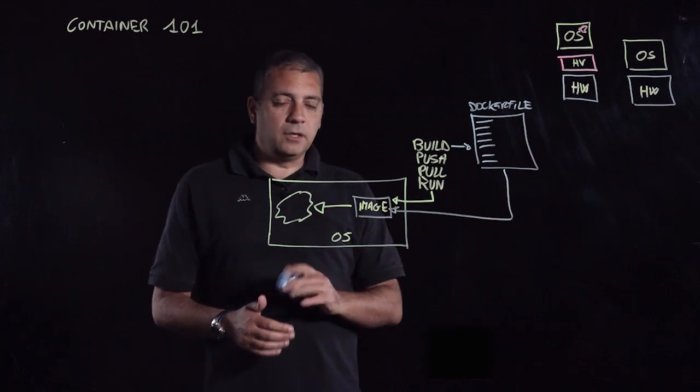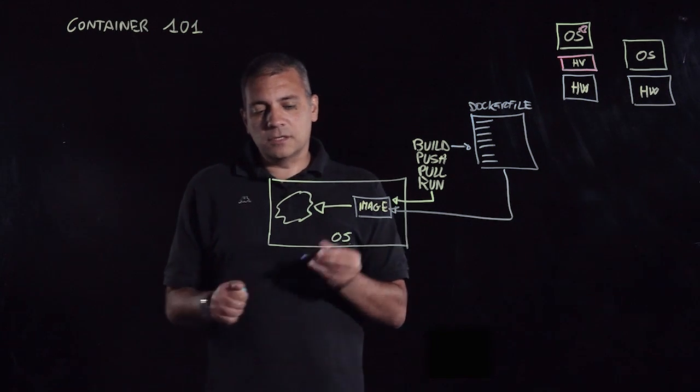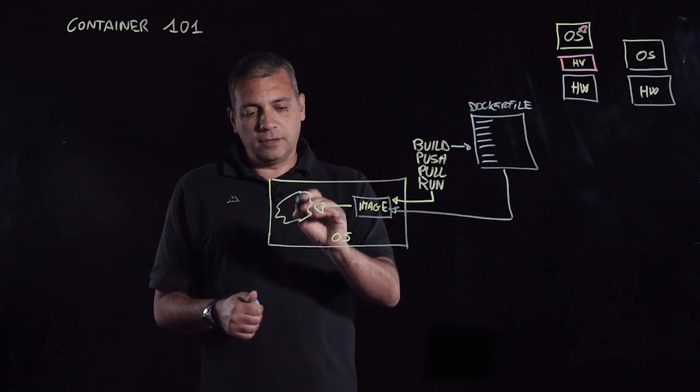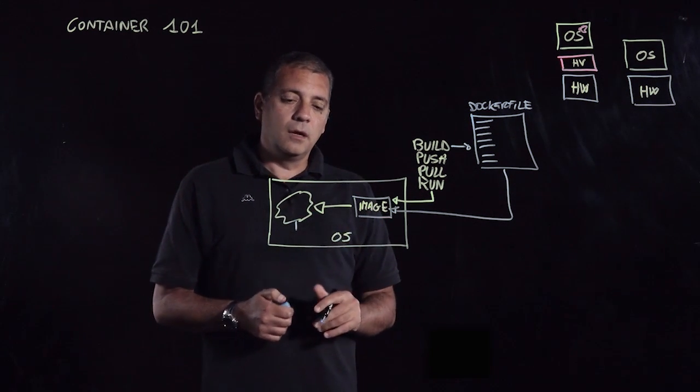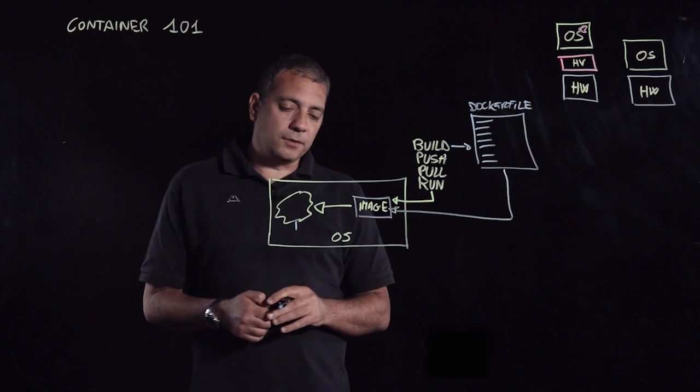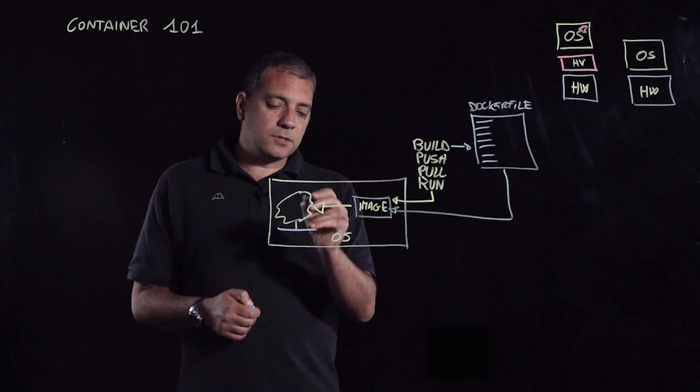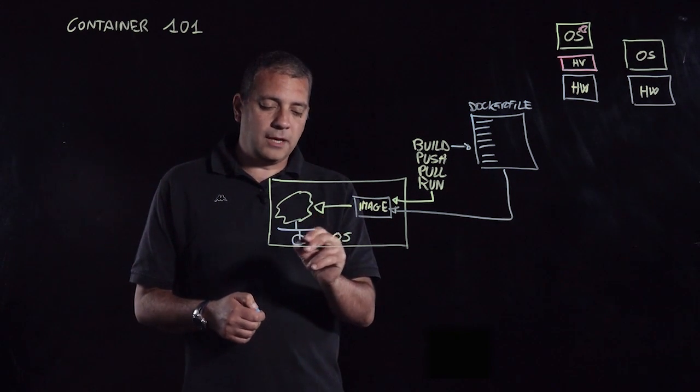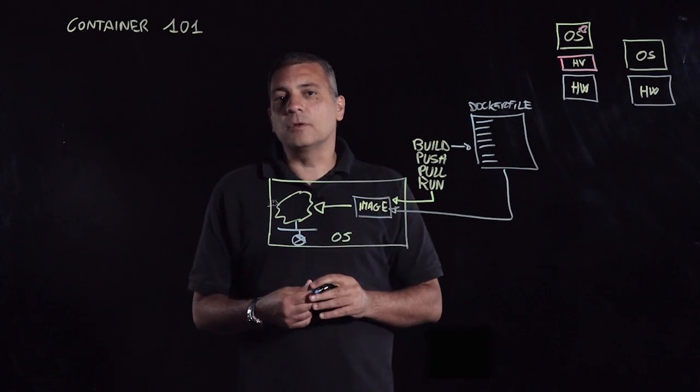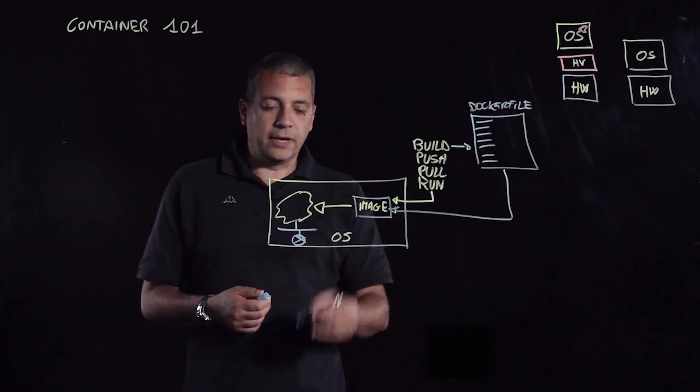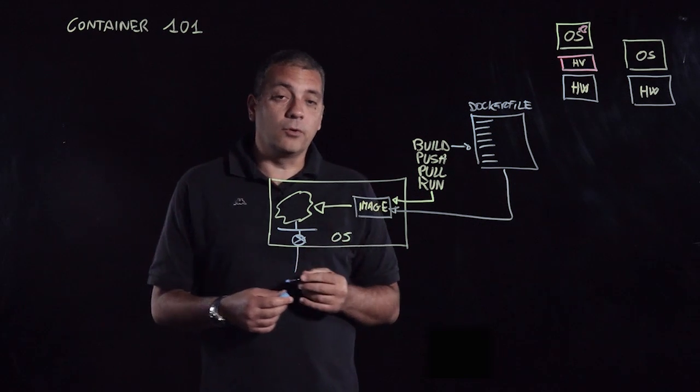So for example, the networking model, particularly in the Docker context, is such that this container has an internal IP address that only exists inside this operating system. And the way that this container gets to the outside world is through a number of NAT rules that exist inside this Docker image, either from going out or going in.